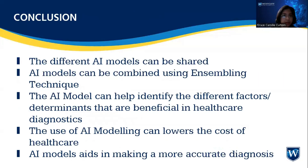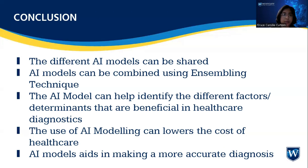To conclude, the different AI models can be shared and combined together using an ensembling technique. AI models can help identify the different factors or determinants that are beneficial for more accurate healthcare diagnostics. The use of AI modeling aims to lower the cost of healthcare in the US, and AI models will eventually help in making more accurate healthcare diagnoses. Thank you so much, and here are the references.